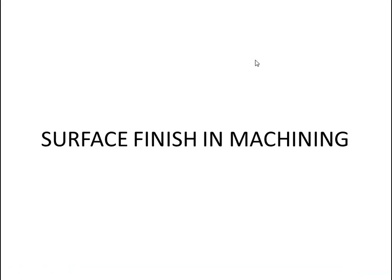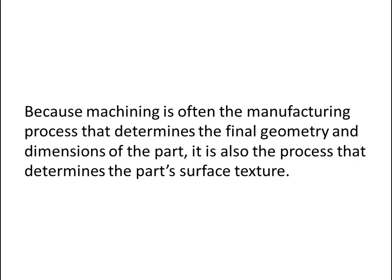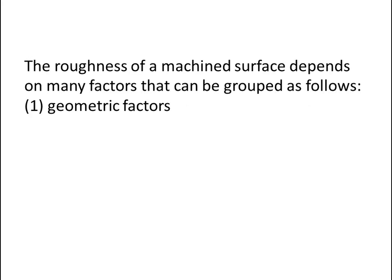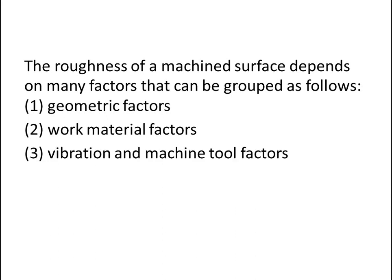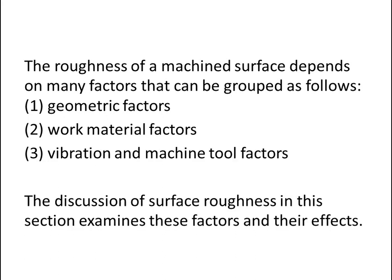Let's talk about surface finish in machining. Machining is often the manufacturing process that determines the final geometry and dimensions of the part, and it is also the process that determines the part's surface structure. The roughness of a machined surface depends on many factors that can be grouped as: geometric factors, work material factors, and vibration and machine tool factors.